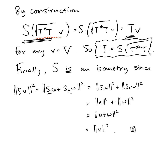That is the proof of the polar decomposition theorem. Don't lose the statement of it because of all the details: this says any linear operator is an isometry times a positive square root. Brilliant — see you next time.